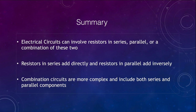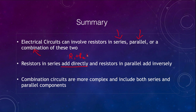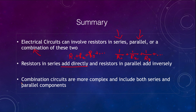To summarize, we looked at electric circuits involving resistors in series, in parallel, or in combination. Resistors in series add directly: R1 plus R2 plus R3 and so on. Resistors in parallel add inversely: 1 over R1 plus 1 over R2 plus 1 over R3 and so on. We also looked at combination circuits which include both series and parallel components. That concludes this lecture on electric circuits. We'll be back again next time for another topic in physical science.